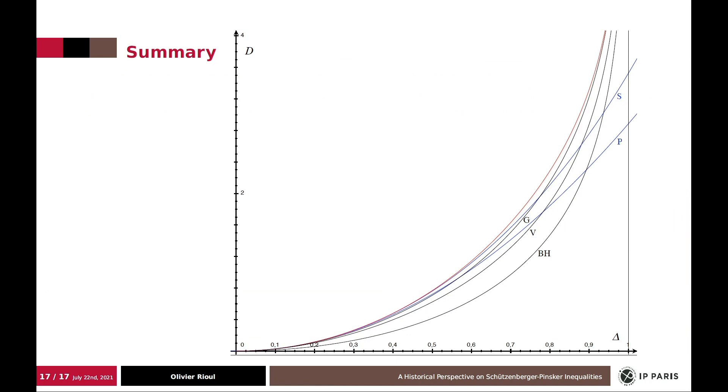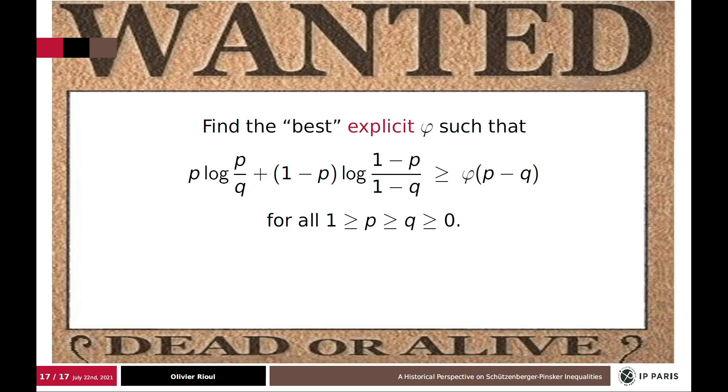And so to summarize, that's about all the Pinsker inequalities we know about. This was Bretagnolle-Huber, this is Vajda, this is Gilardoni, this is Pinsker, and this is Schützenberger, which I talked to you about. If you have any other questions, if you would like to break the record, then you just have to find the best explicit function phi, which satisfies this inequality. So it's up to you now. Thank you.